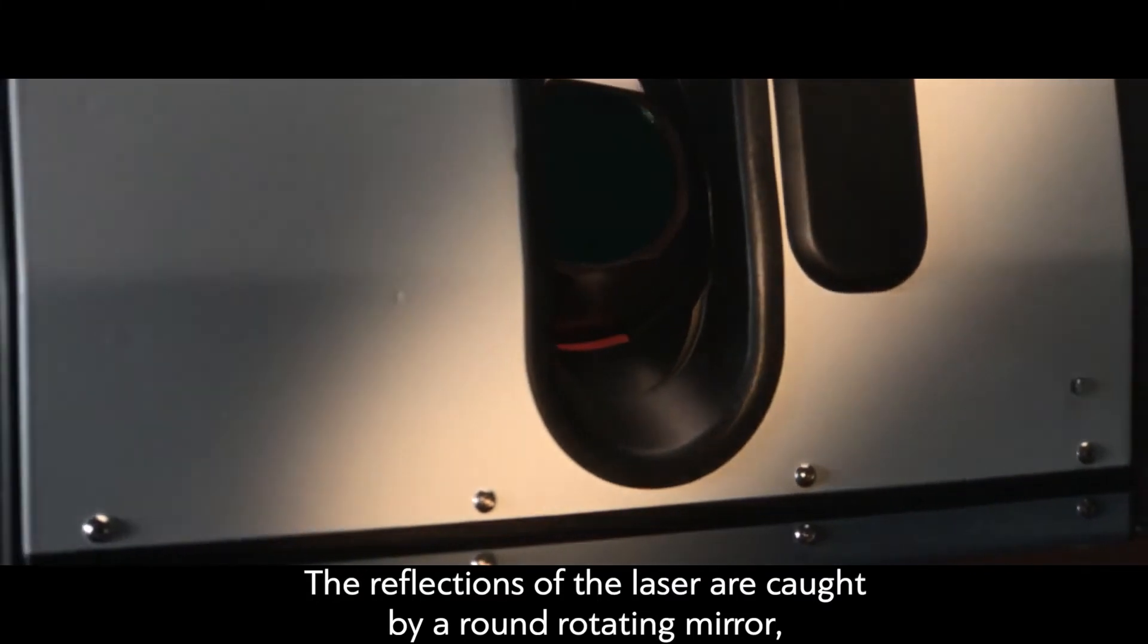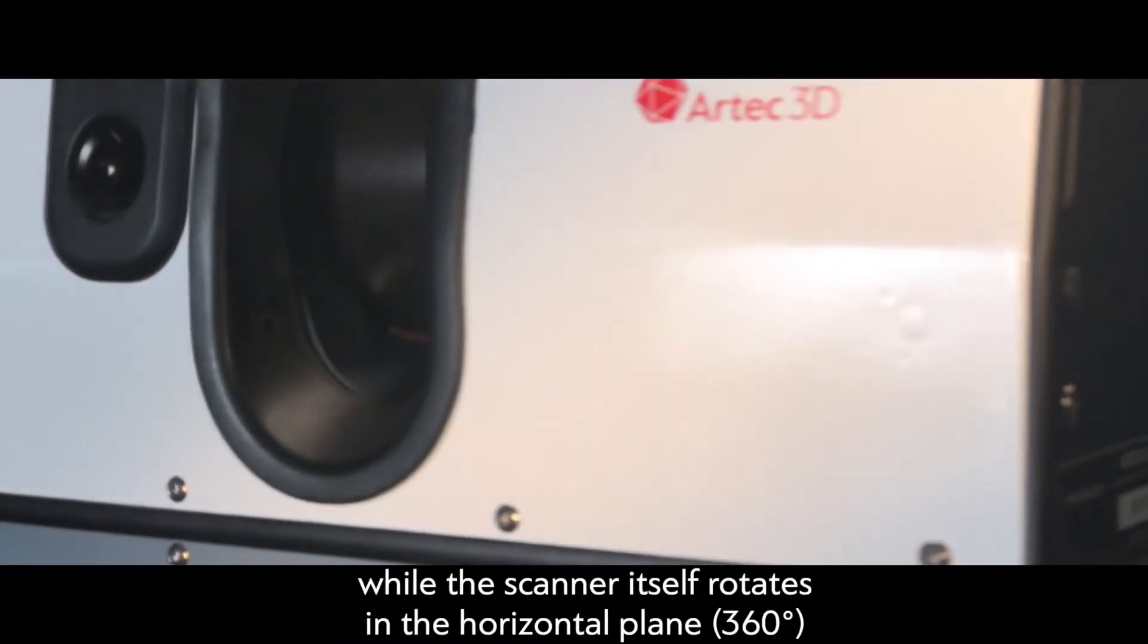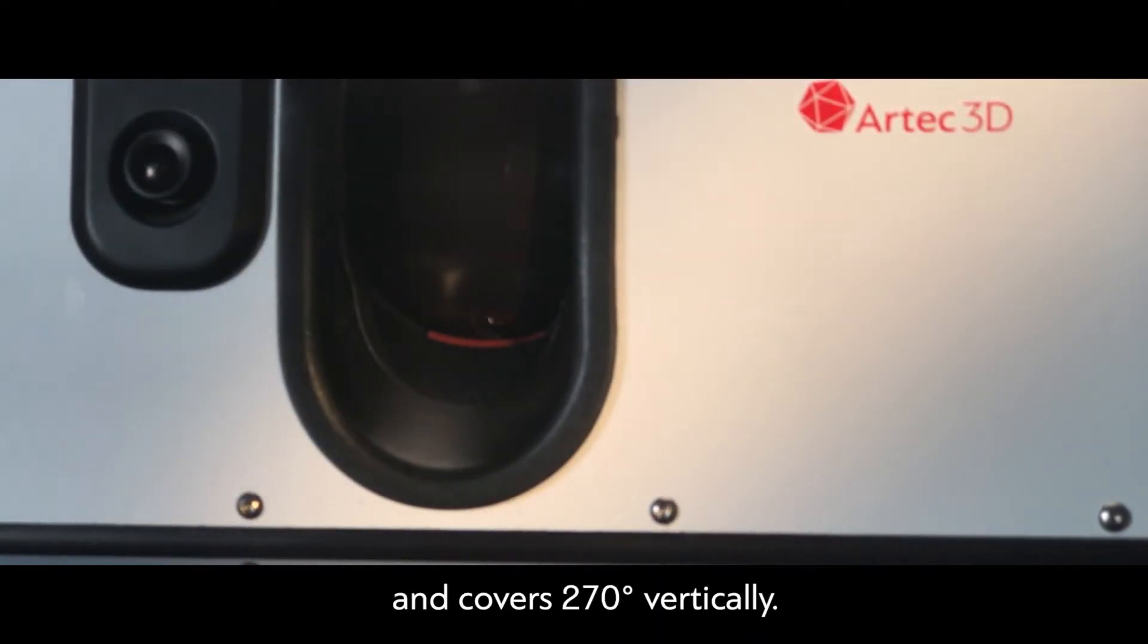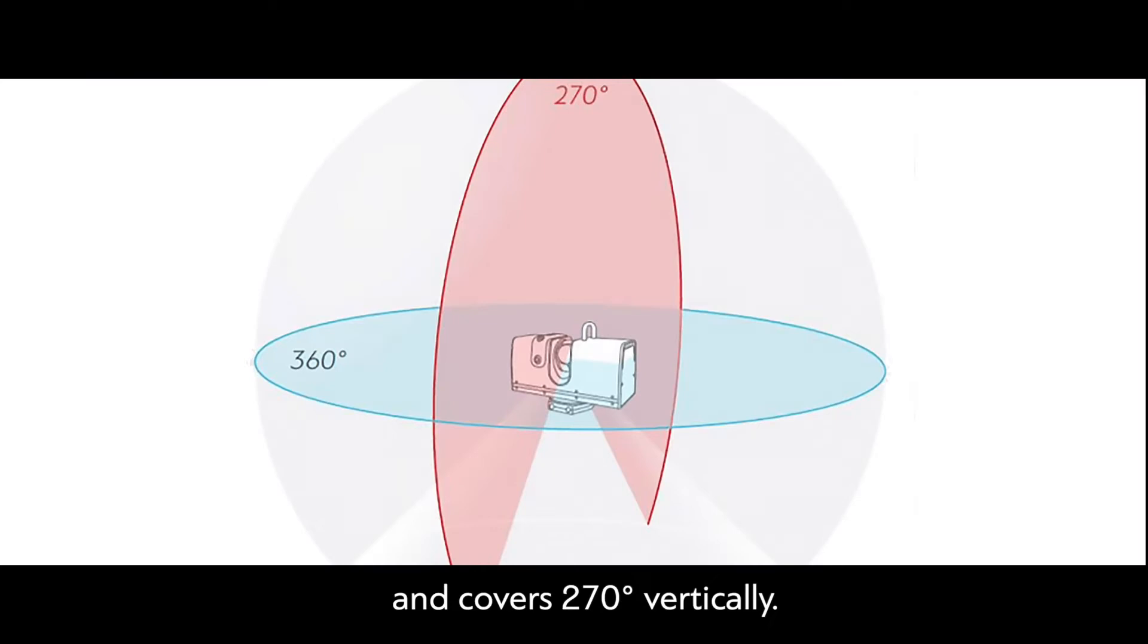The reflections of the laser are caught by a round rotating mirror, while the scanner itself rotates in the horizontal plane 360 degrees, while the scanner covers 270 degrees vertically.